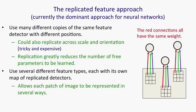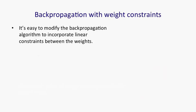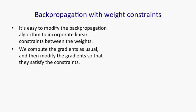Replicated features fit in nicely with back propagation. It's easy to learn them using back propagation. In fact, it's easy to modify the back propagation algorithm to incorporate any kind of linear constraint between the weights. So what we do is we compute the gradients as usual, but then we modify the gradients so that if the weights satisfied the linear constraint before the weight update, they'll also satisfy the linear constraint after the weight update.